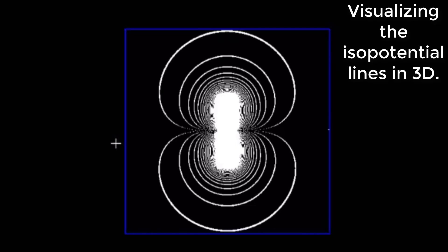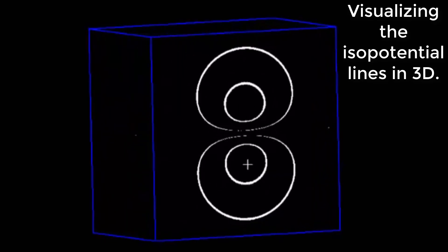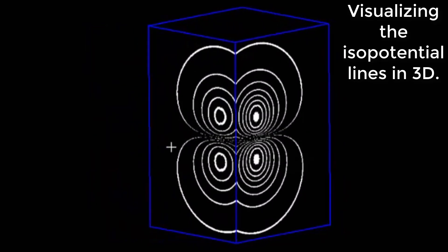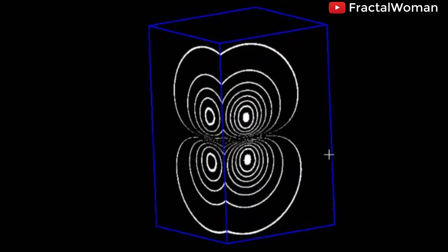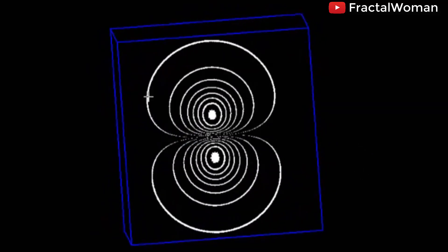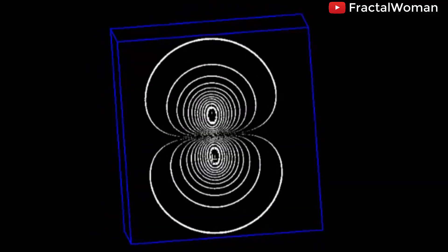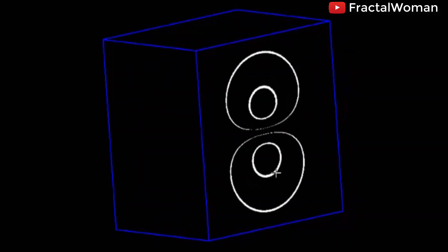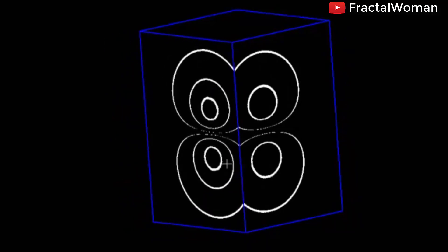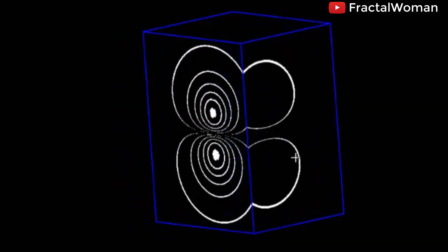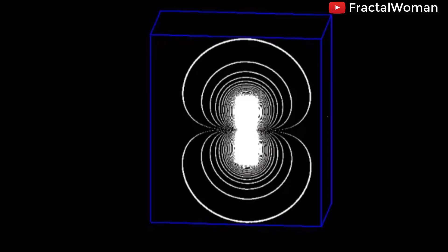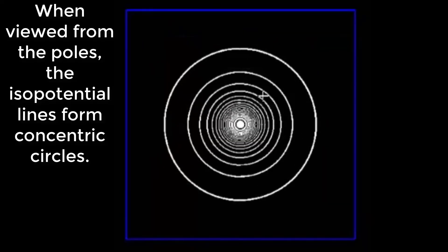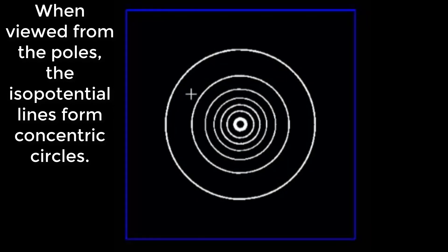Visualizing the isopotential lines in 3D. When viewed from the poles the isopotential lines form concentric circles.